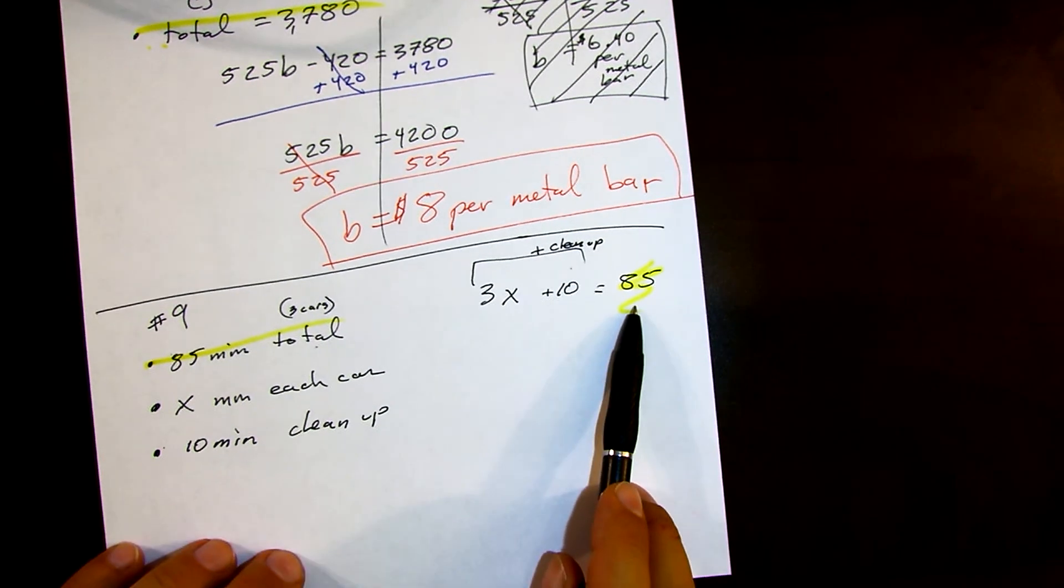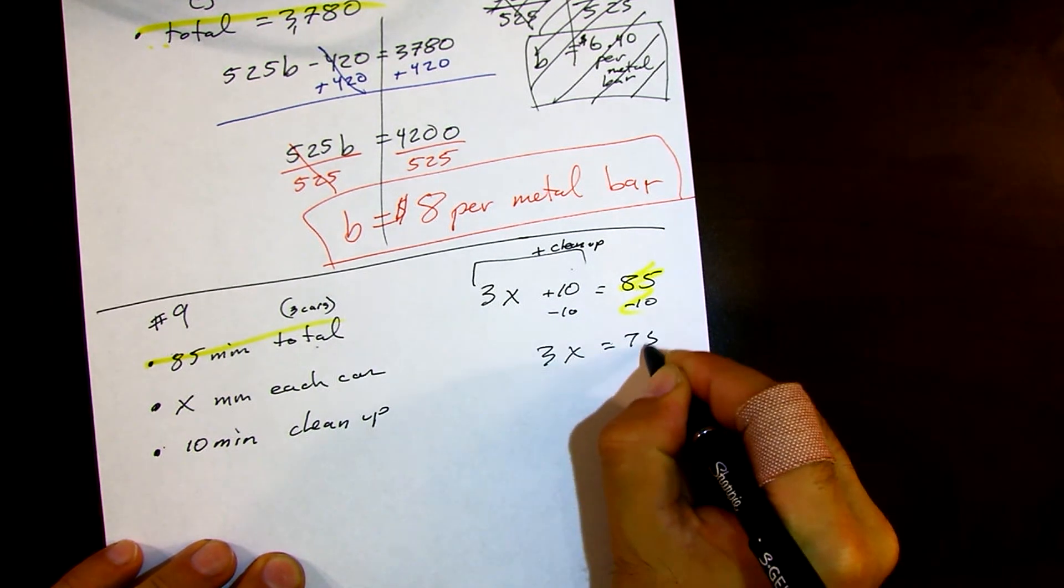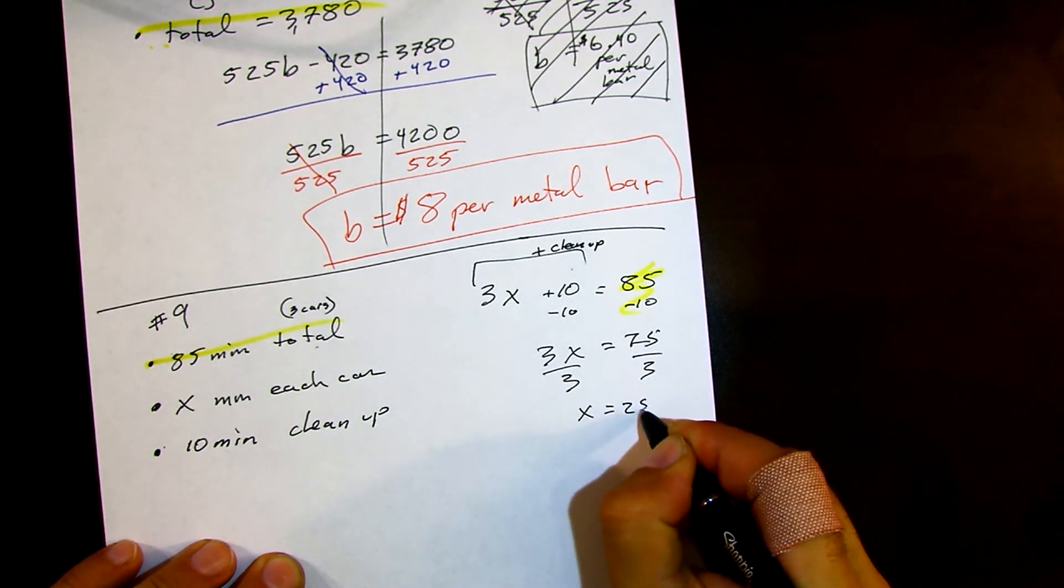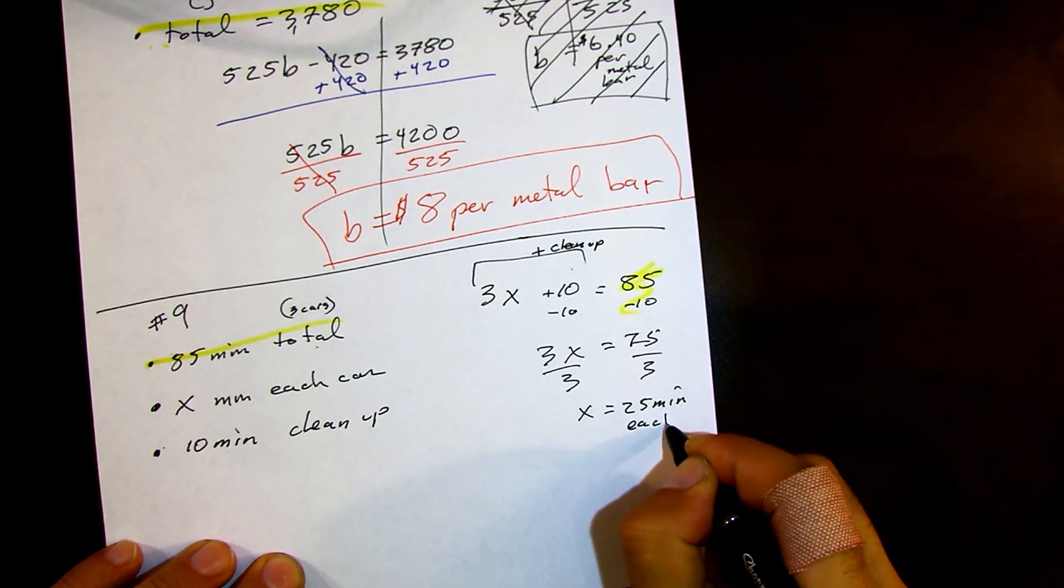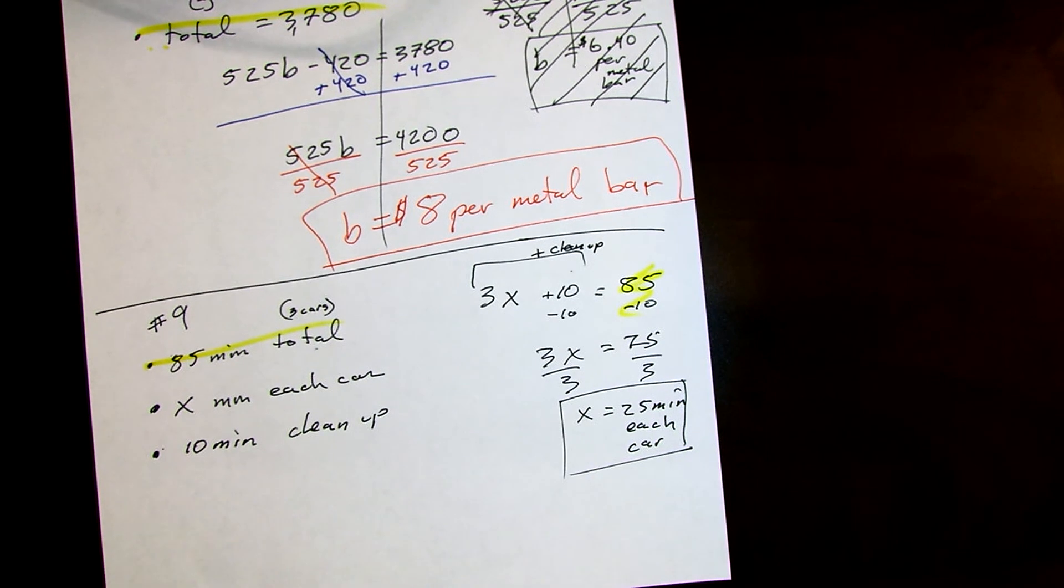The total goes on the right. So I'm going to put 85 minutes over there. We have three cars times X plus 10 minutes cleanup equals 85 minutes. Minus 10 from both sides, 3X equals 75. Divide it, X is 25 minutes each car. That would be 100% full credit. Keep that in mind that you have to have units.